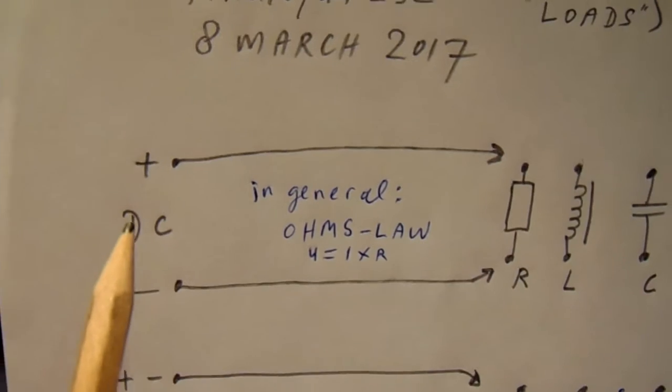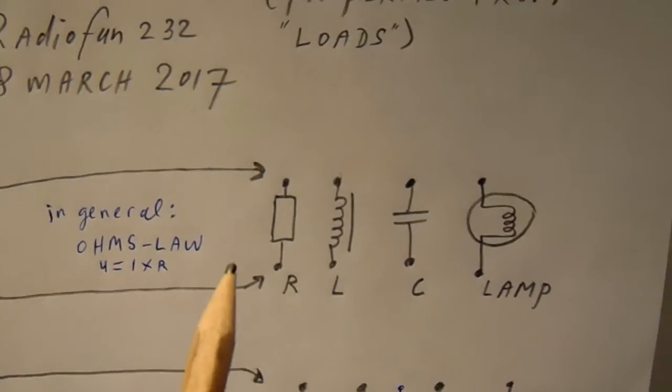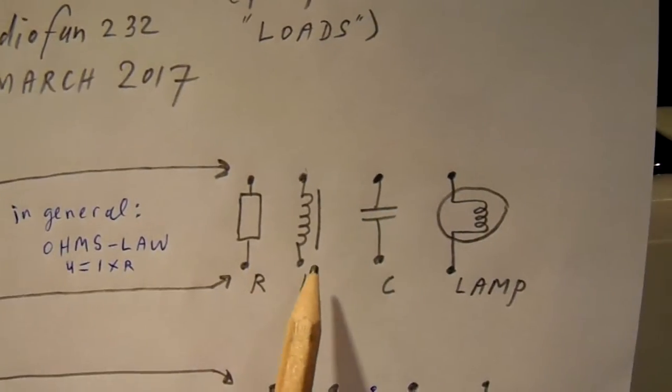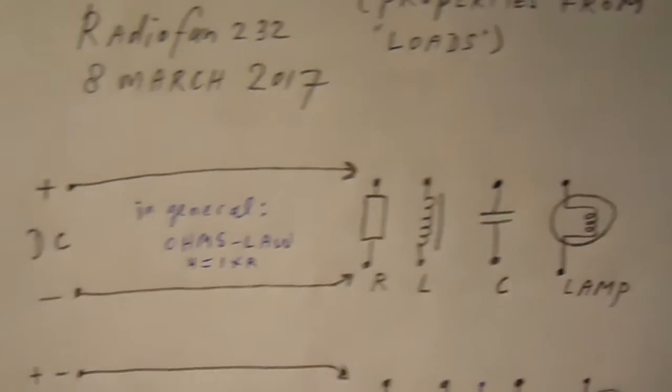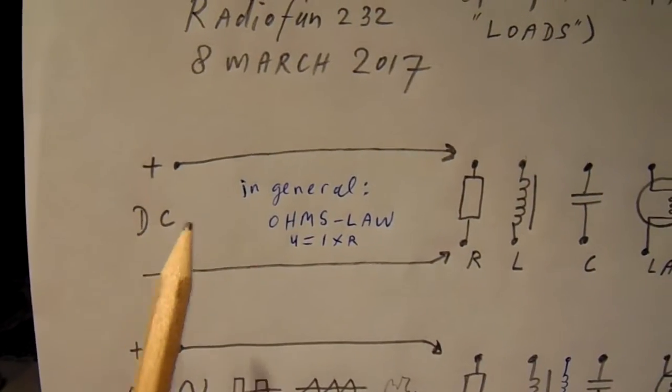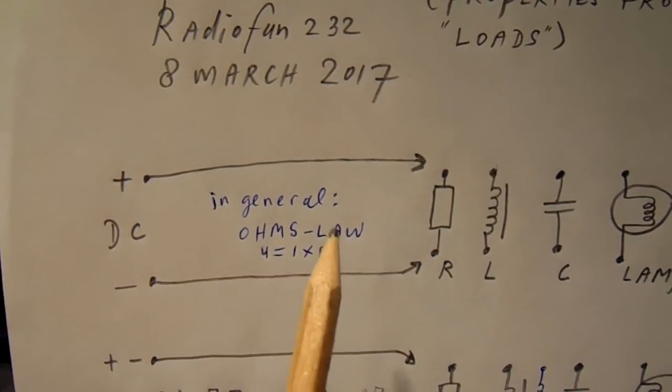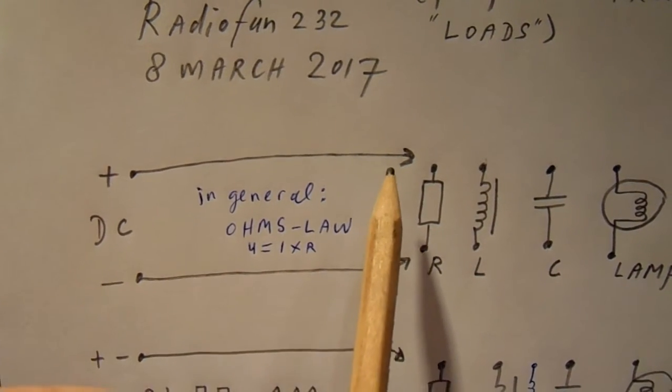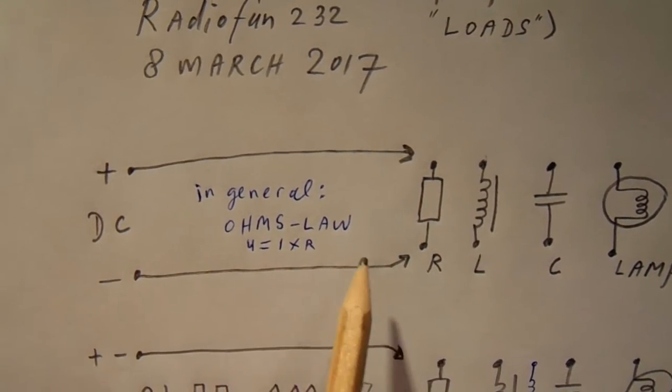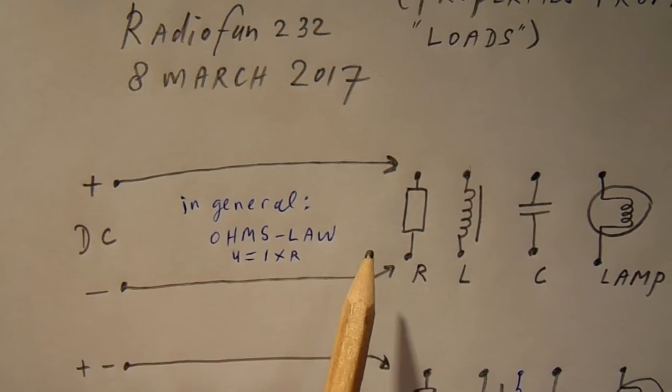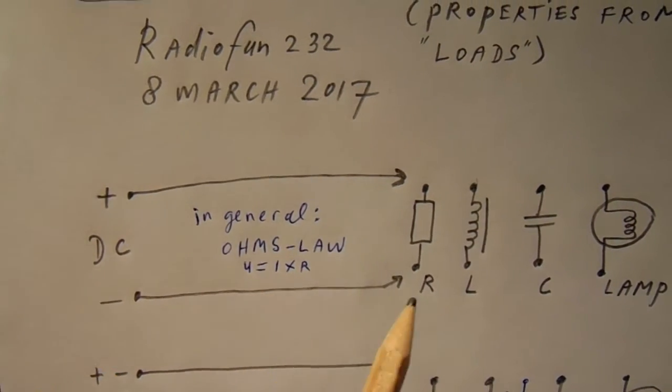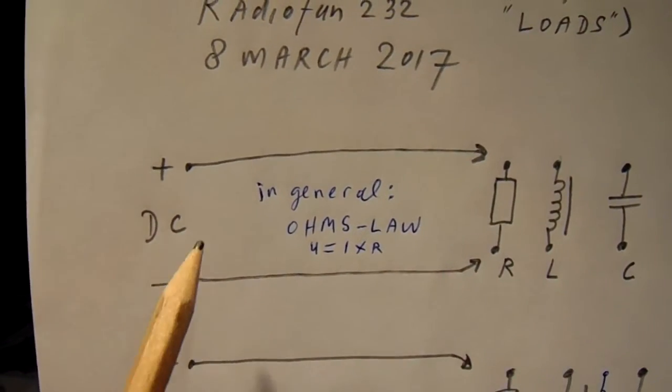So what happens when we add DC to a resistor, a coil, a cap or a lamp? Well, here nothing happens. When you connect DC, a current starts to flow and the whole thing obeys to Ohm's law.